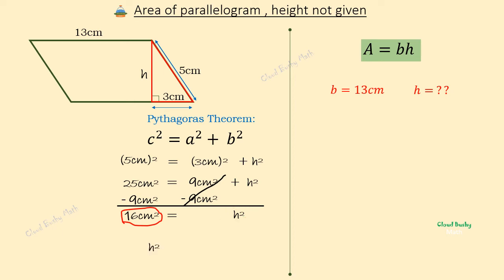So h squared is equal to 16 square centimeters. To find h, we take the square root of both sides of this equation. The square root of h squared is h, and the square root of 16 square centimeters is plus or minus 4 centimeters. Because we are dealing with length, h is equal to 4 centimeters.